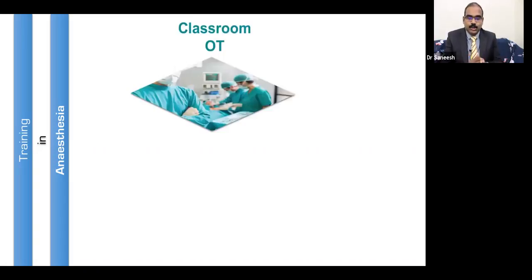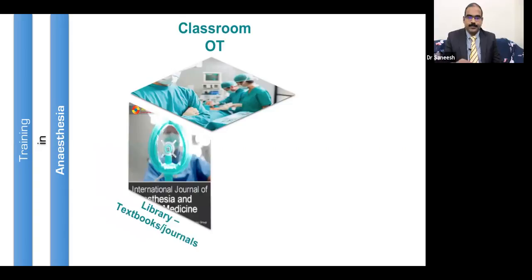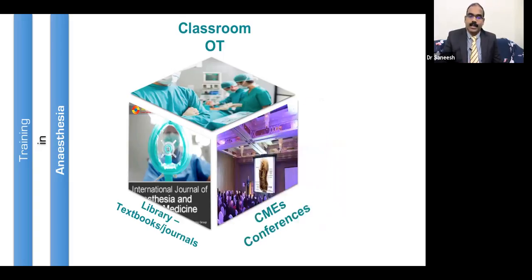Training in anaesthesia happens in the following conventional ways: classroom teaching, bedside teaching in the operating theatre. Post-graduates and academic enthusiasts can find literature in the library in the form of textbooks and journals. CMEs and conferences also have their role in keeping academics updated and practice refined.